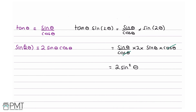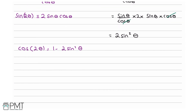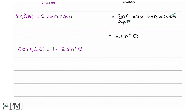Now we need to use another trigonometric identity: cos2θ equals 1 minus 2 sin²θ. Rearranging for 2 sin²θ, we get 2 sin²θ equals 1 minus cos2θ. By extent, this equals 1 minus cos2θ as required.